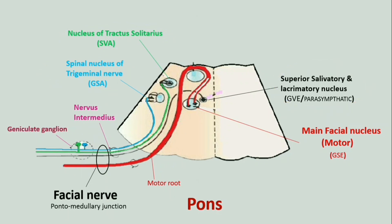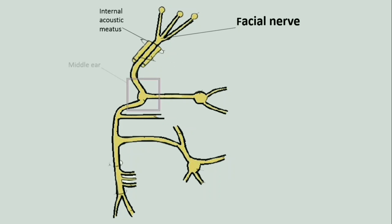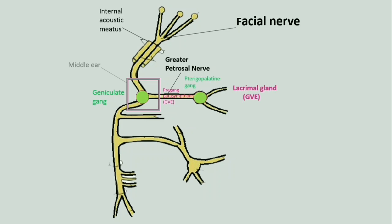The facial nerve leaves the cranial cavity with the vestibulocochlear nerve and enters the internal acoustic meatus. It then reaches the medial wall of the middle ear cavity, where the sensory root expands to form the geniculate ganglion. The greater petrosal nerve arises at the geniculate ganglion and conveys preganglionic parasympathetic fibers to the pterygopalatine ganglion. Postganglionic fibers supply the lacrimal gland via the lacrimal nerve, and the glands of the nose and palate.